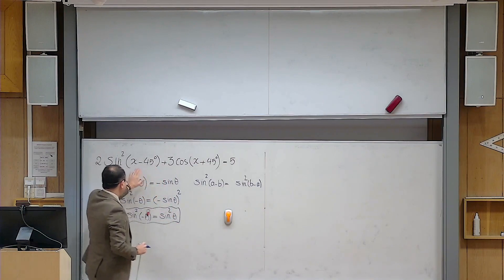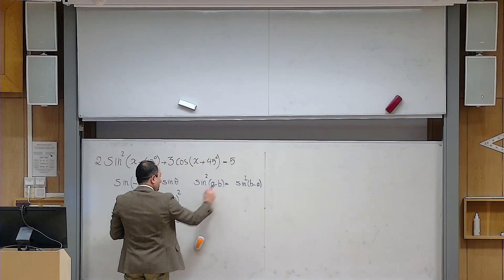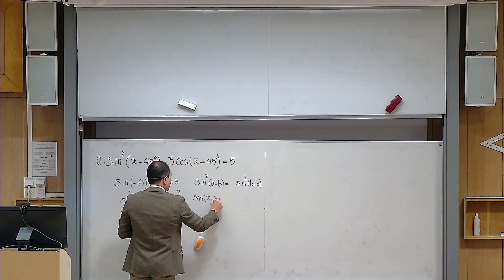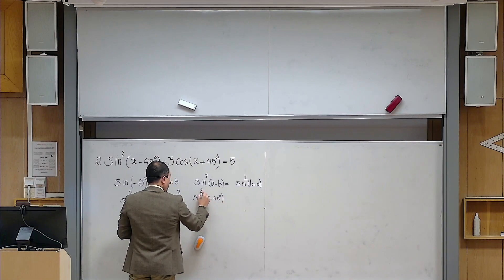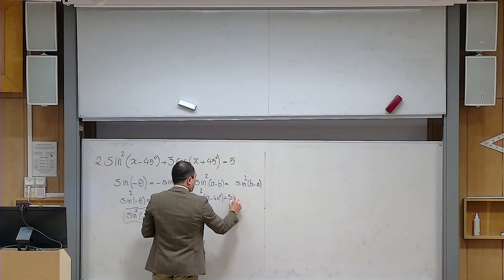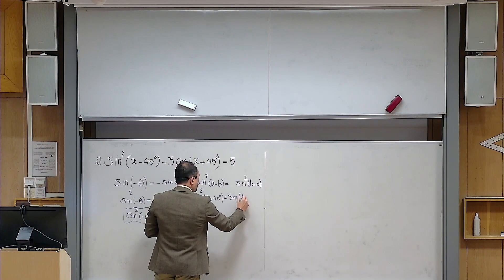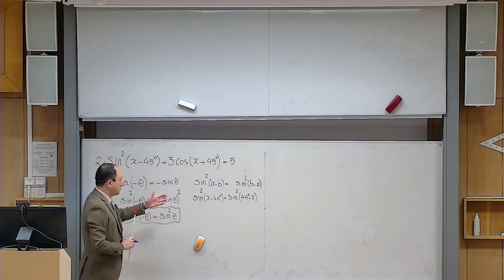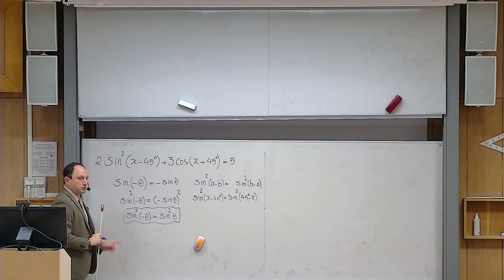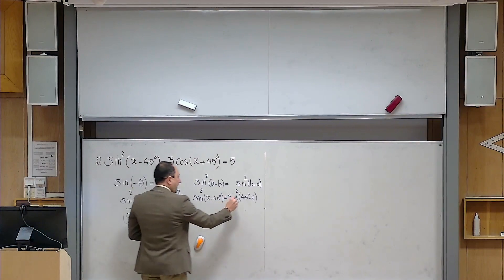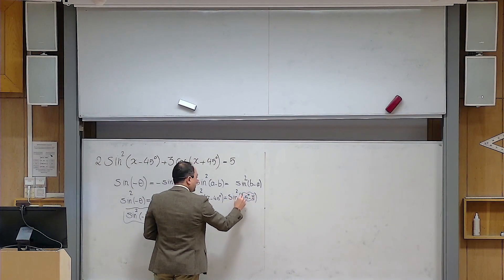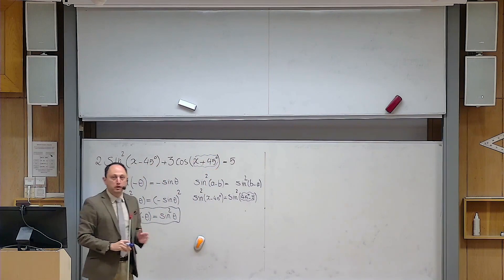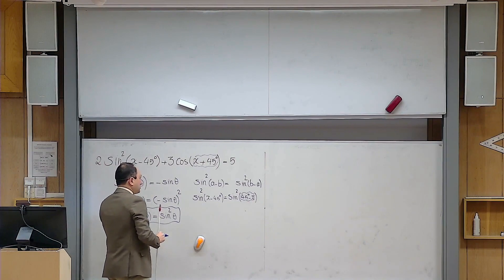Why is that? Let us look here. According to what I described, sine of x minus 45 degrees squared equals sine of 45 degrees minus x squared. You might wonder why this is useful. The reason this is useful is because now the angle that you see here and the angle that appears in front of cosine become complementary angles. Why is that? Let us check.